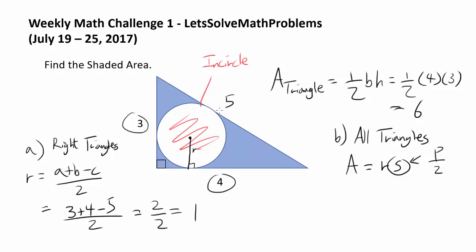It's 3 plus 4 plus 5 which is 12. So semi-perimeter is 6. So this is 6r. And it is going to equal the area of the triangle, which we already found to be 6. So radius is 1. So either way, you should get the same answer of radius being 1.